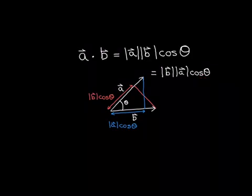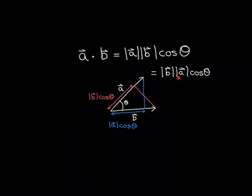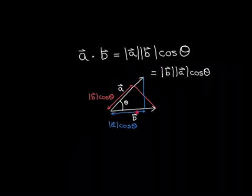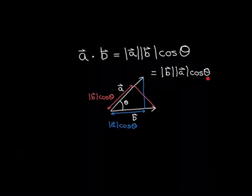The modulus of A times cos θ is shown in blue in the picture. Just as we did for vector B, we can split vector A into two components: a component in the same direction as vector B, and a component perpendicular to vector B. The modulus of A cos θ forms a right-angled triangle with vector A as the hypotenuse, so modulus of A times cos θ gives the length of the component in the same direction as vector B.